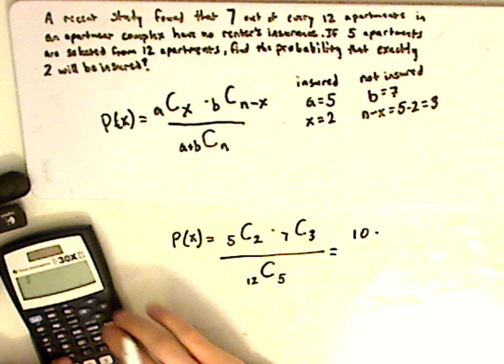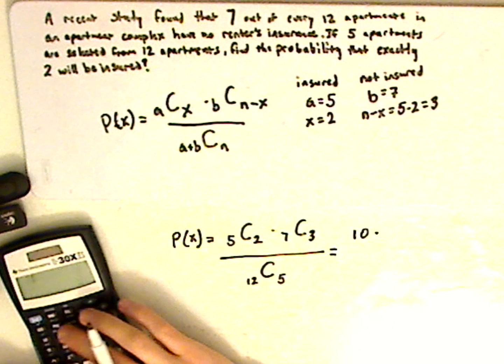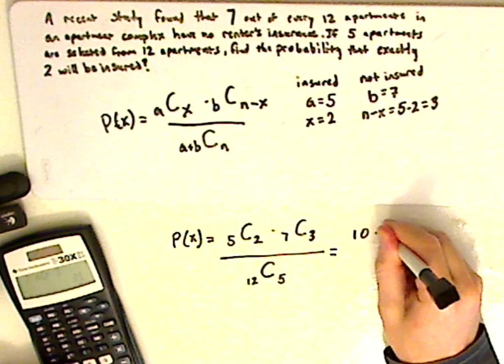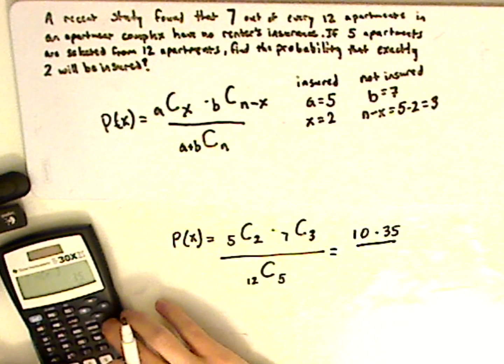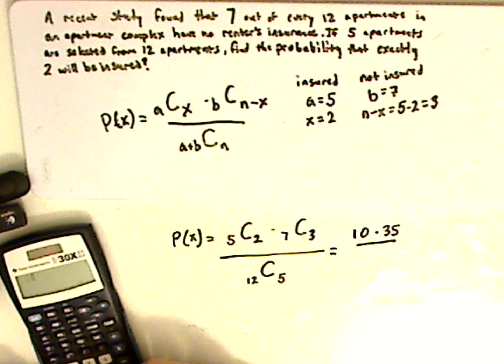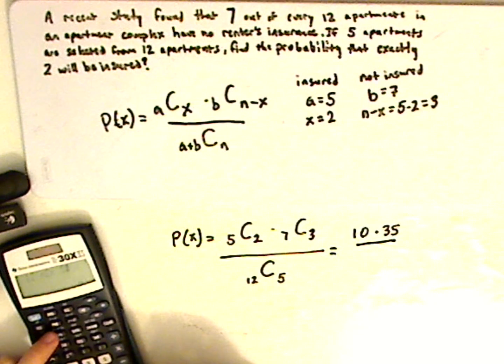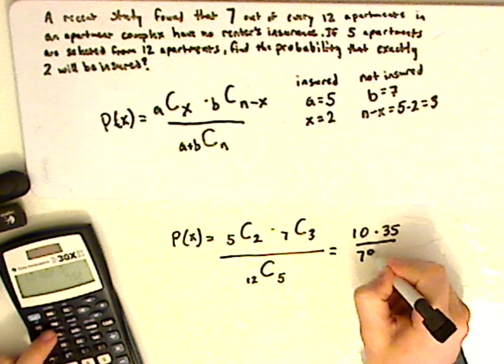And then 7 combinations 3 gives me 35, and then this, 12 combinations 5 is 792.